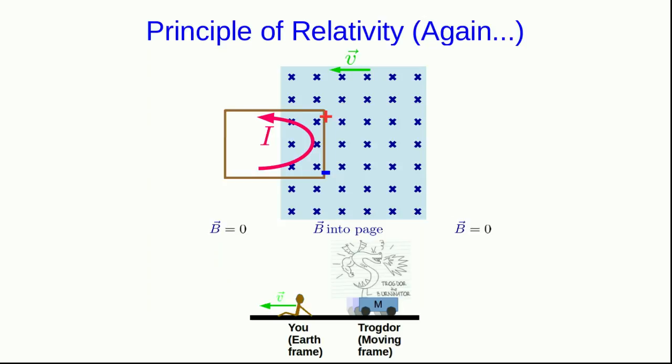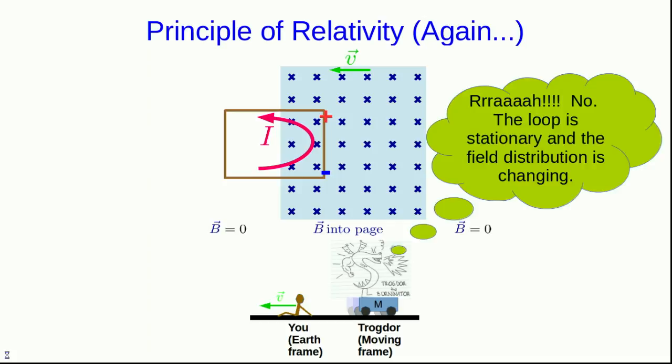But think about it from Trogdor's point of view. From Trogdor's point of view, the loop is stationary. It's the region of B field that's moving. So either the source of this B field is moving, or there are multiple sources and their behavior is changing. But either way, the field, the way the field is distributed in space, is changing. So according to Trogdor, the loop is stationary, and the field distribution is changing.